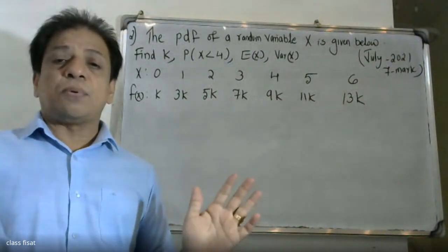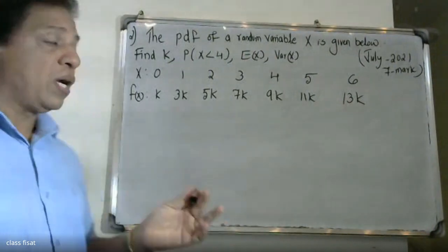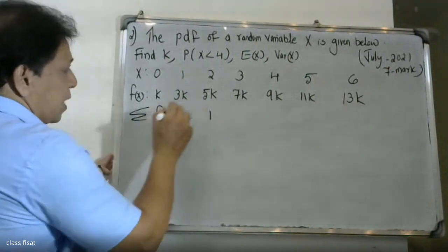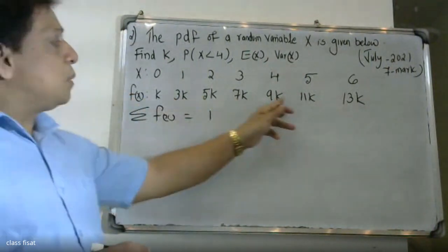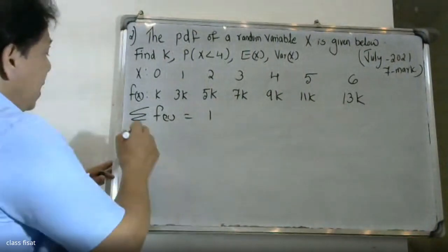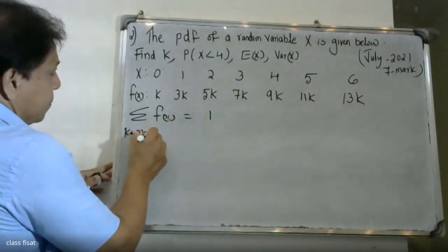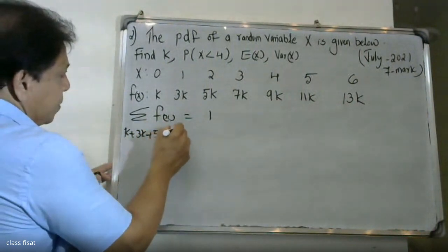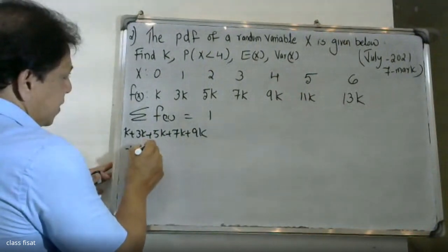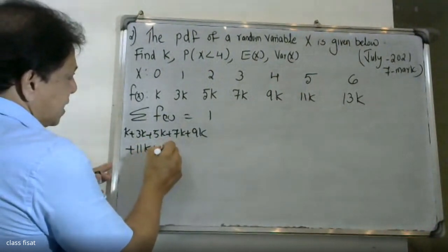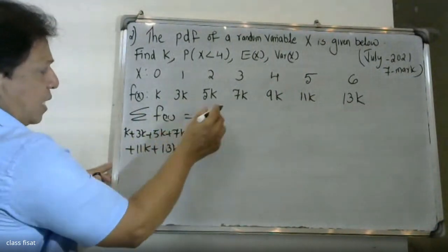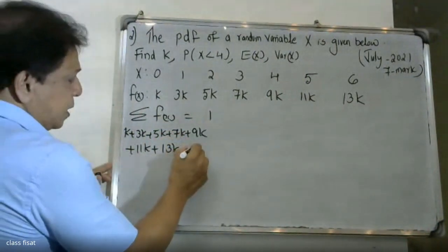Using the property that total probability equals 1, sigma f(x) is equal to 1. So k plus 3k plus 5k plus 7k plus 9k plus 11k plus 13k is equal to 1, giving us 49k equals 1.